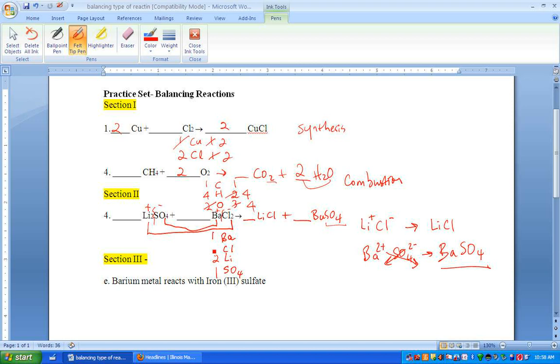So lithium is 2 on the left side. Sulfate is 1. Barium is 1. Chlorine is 2. Lithium here is 1, 1, 1, and 1. So we can start from anywhere. Let's start from lithium. We can put a 2 here and that actually changes both of that and you're done. And this again is a double displacement reaction.